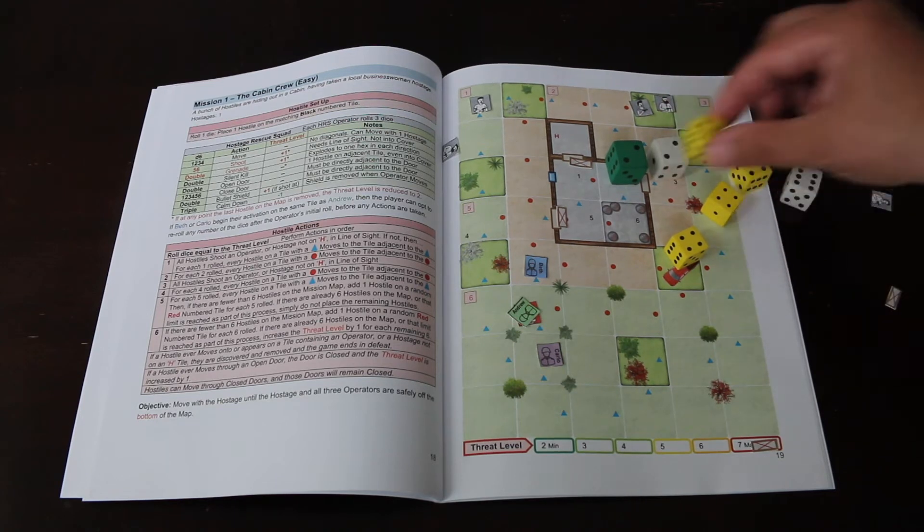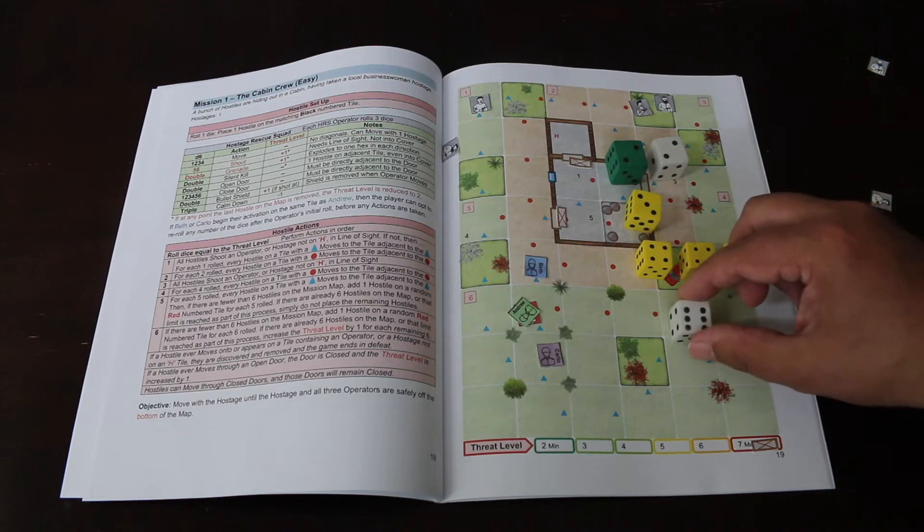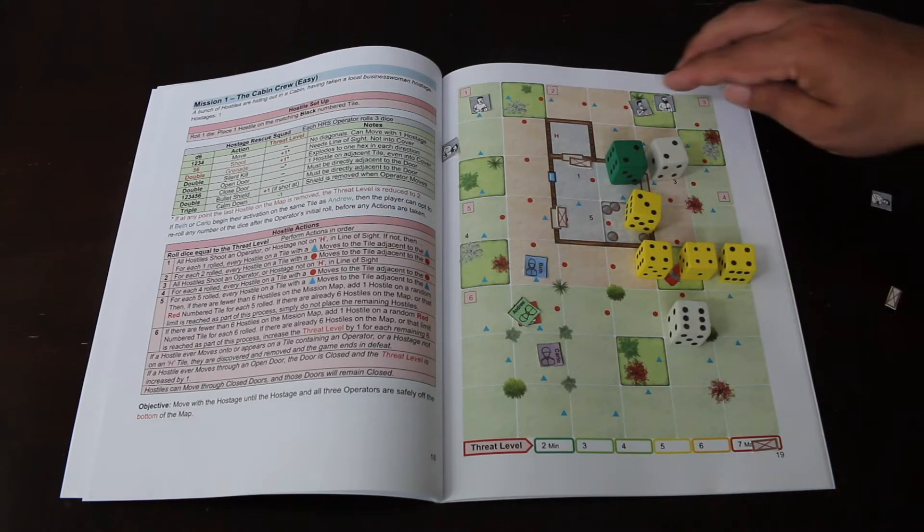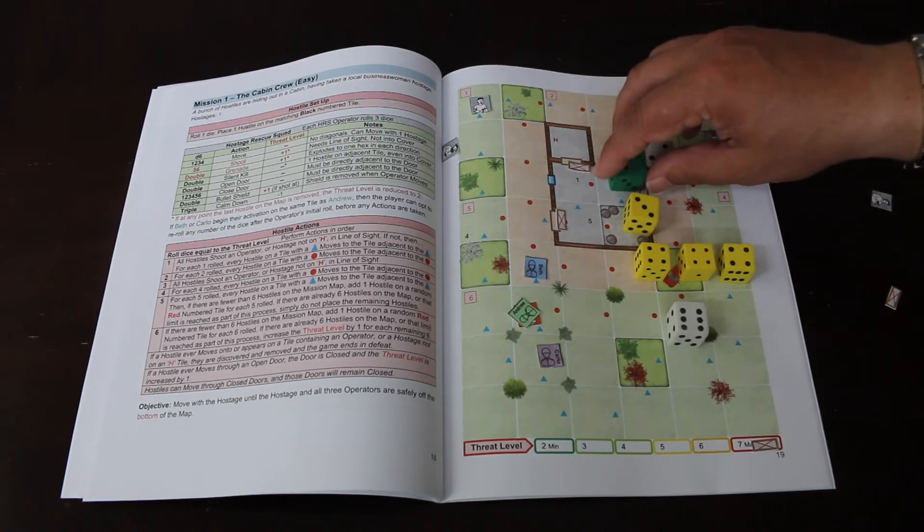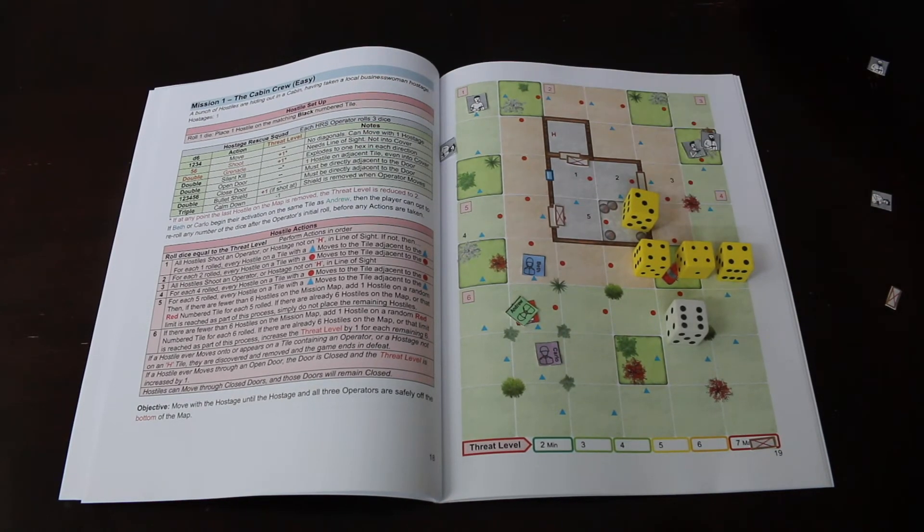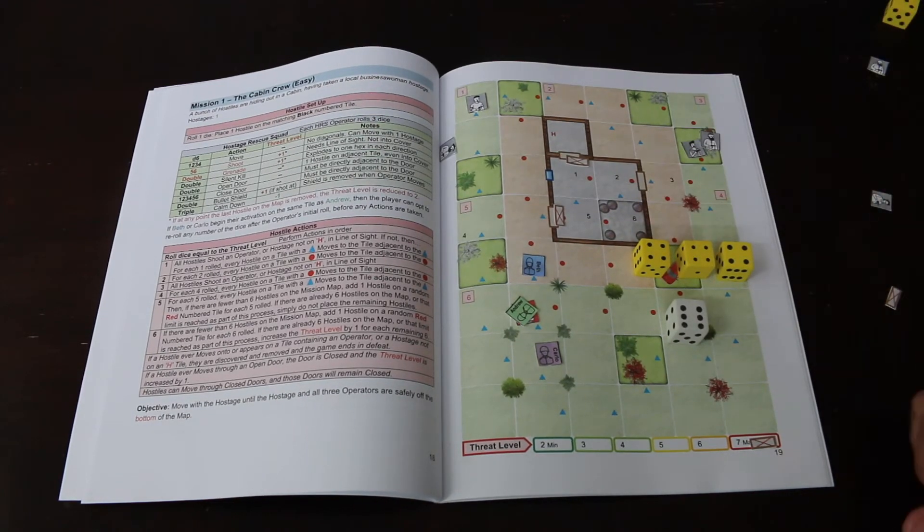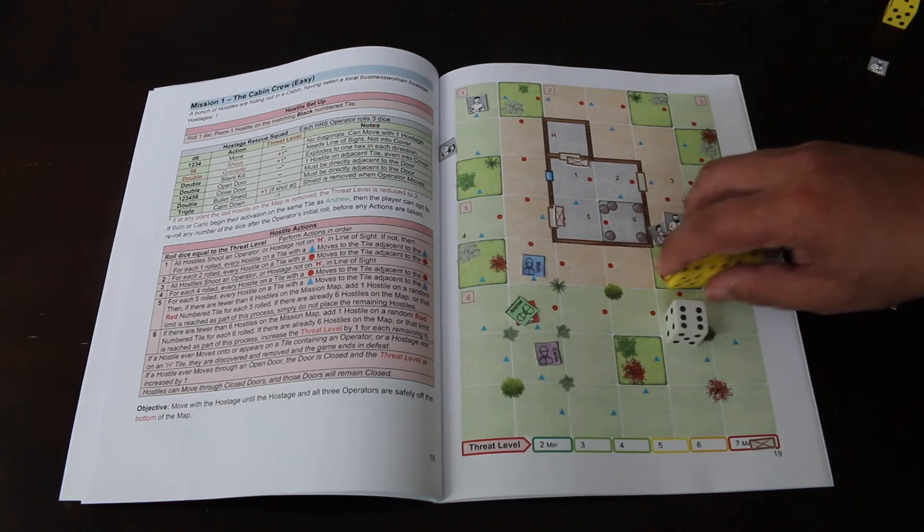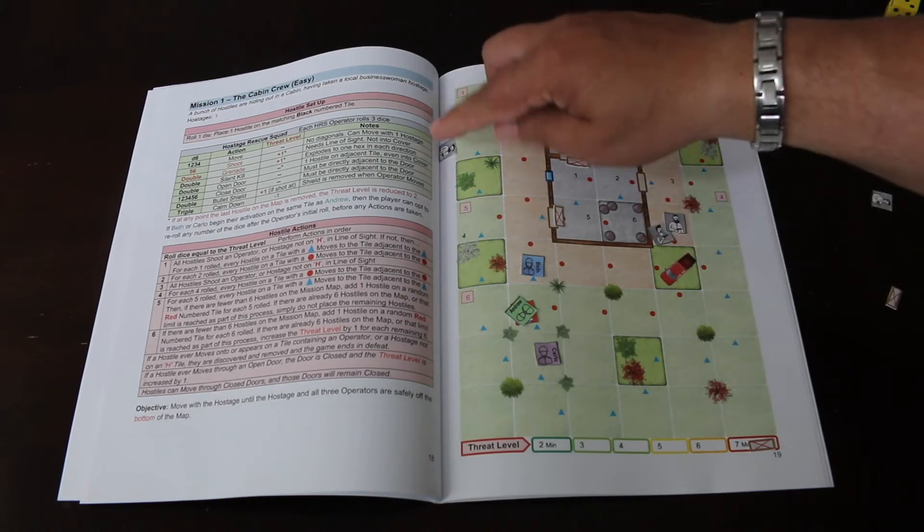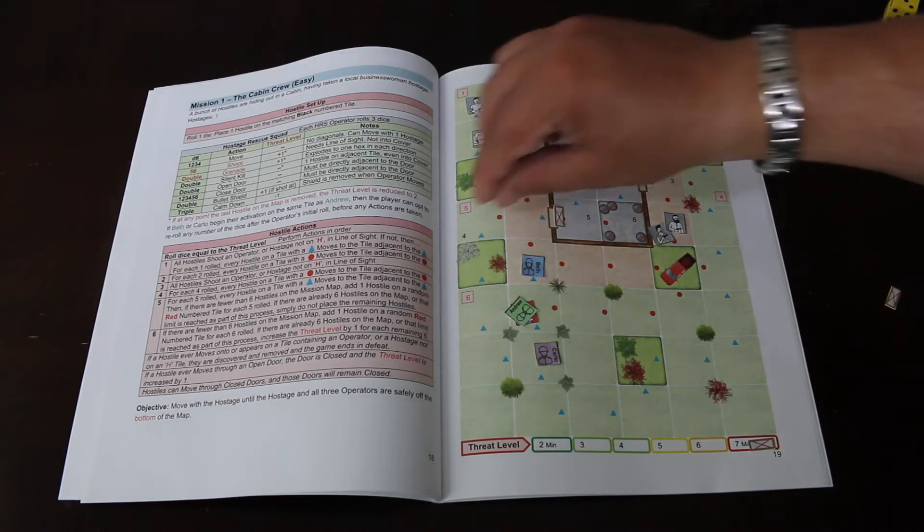Now the bad guys - they roll seven dice. Two twos, a three, three fours, and a six. This is on a red circle, so it goes one, two. Then for the three, shooting if anyone in line of sight. We got three fours. One, two, three. Then we roll to put another bad guy onto the board. He comes in at five, so that's here.